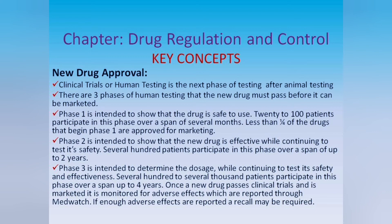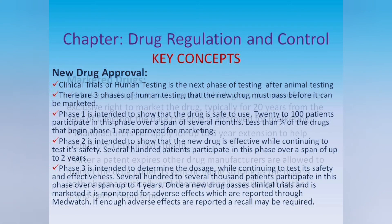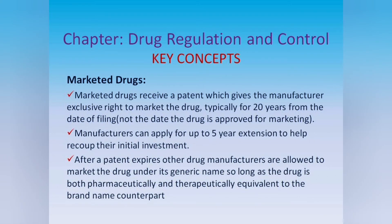If enough adverse effects are reported, a recall may be required. Marketed drugs receive a patent which gives the manufacturer exclusive rights to market the drug, typically for 20 years from the date of filing, not the date the drug is approved for marketing. Manufacturers can apply for up to a five-year extension to help recoup their initial investment. After a patent expires, other drug manufacturers are allowed to market the drug under its generic name.